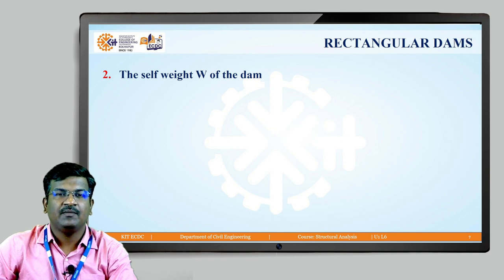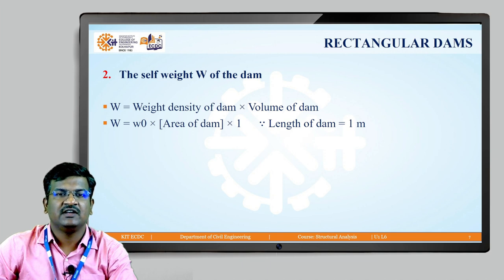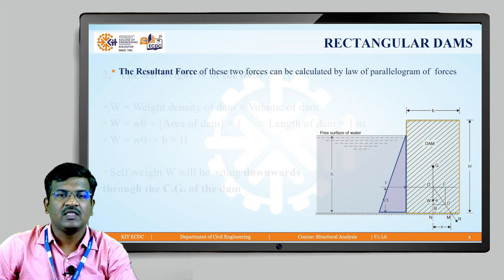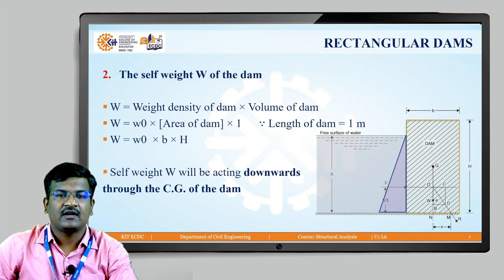The second type of load acting on the dam is the self-weight W. Self-weight is calculated as weight density of dam material multiplied by volume. Volume is area multiplied by length, so W = w-naught × b × H × 1. The self-weight acts downward, passing through the centre of gravity (CG) of the dam. In the figure, G is the CG of the rectangular dam and W acts downward through it.